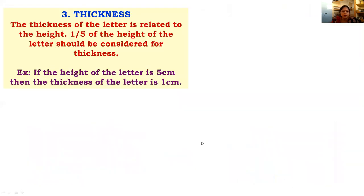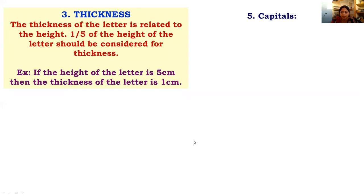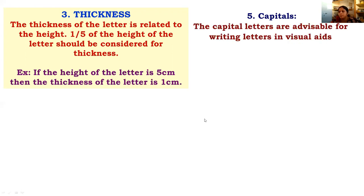The third point is the thickness of the letter. The thickness is related to the height — it should be one-fifth of the height. For example, if the height of a letter is 5 centimeters, then the thickness should be 1 centimeter.